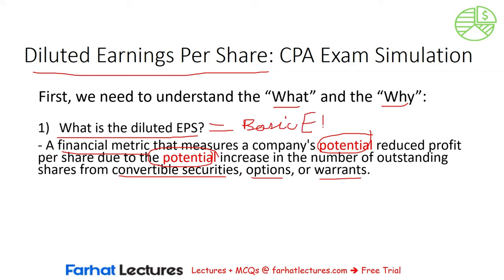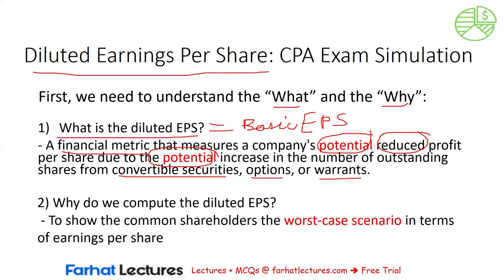However, the presence of any of these three is not going to automatically dilute the EPS. We have to compute the effect of any convertible securities on the basic EPS and see if it is going to reduce the profit per share. We are required to apply the rule of conservatism and show only the worst case scenario — potential bad news to the shareholders or to the investors.